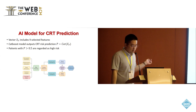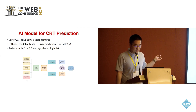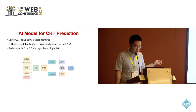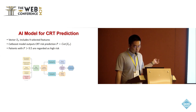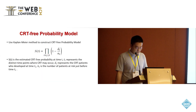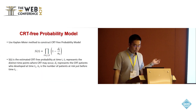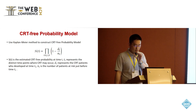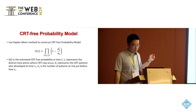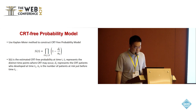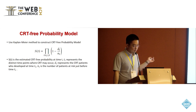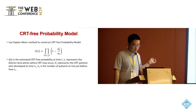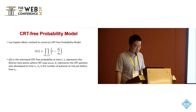The model's input is formalized as vector xp, which includes the nine selected features. The output p represents the probability of CRT. Patients with p greater than 0.5 are regarded as high risk. The whole model structure is shown in the figure. We also use the Kaplan-Meier method to give CRT-free probability over time. S(T) is the estimated CRT-free probability at time TI. TI represents the distinct time point where CRT may occur, DI represents the CRT patients who develop at time TI, and NI is the number of patients at risk just before time TI.